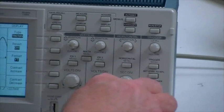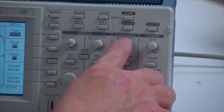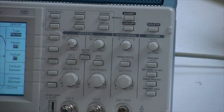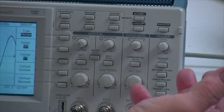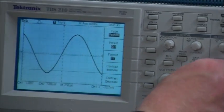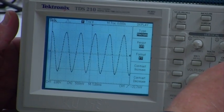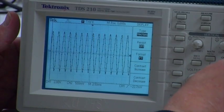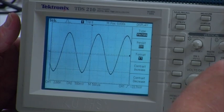This one over here, this set of controls marked horizontal, controls the x-axis, which is time. And so when I change the seconds per division, it lets me see more cycles or fewer cycles.